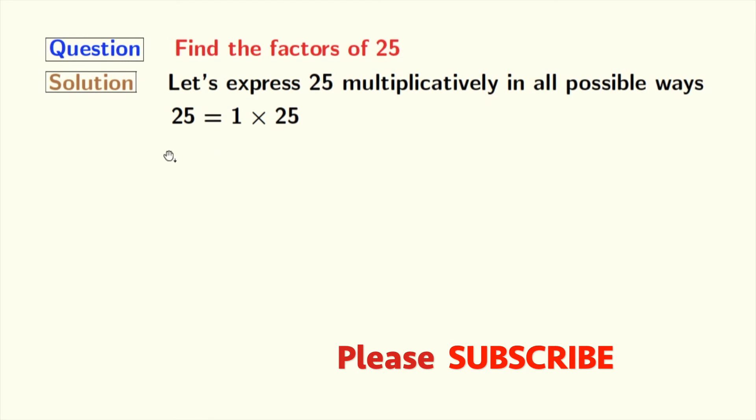Next numbers 3 and 4 also do not divide 25. So, we will try for 5. And we see that 5 times 5 is equal to 25.